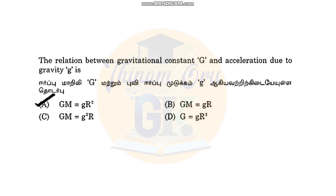There is a gravitational constant — acceleration due to gravity, G. If G is equal to E, the relation is N. Gm is equal to G, R squared.